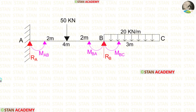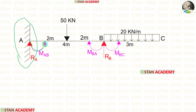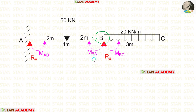In this analysis, we have to find three moments. At point A, there is a fixed support, so there will be a moment MAB. At joint B, there will be two moments: MBA and MBC. So in total, we have to find three moments.